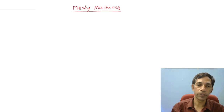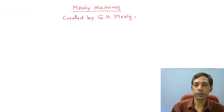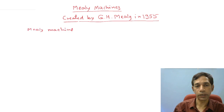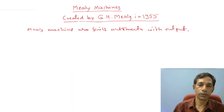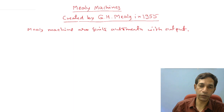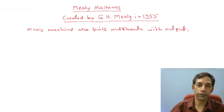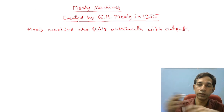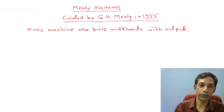We are going to discuss the Mealy machines, created by Mealy in 1935. Mealy machines are finite automata with output. Here we will see that the finite automata produce the output explicitly — your finite automata is going to produce the output.